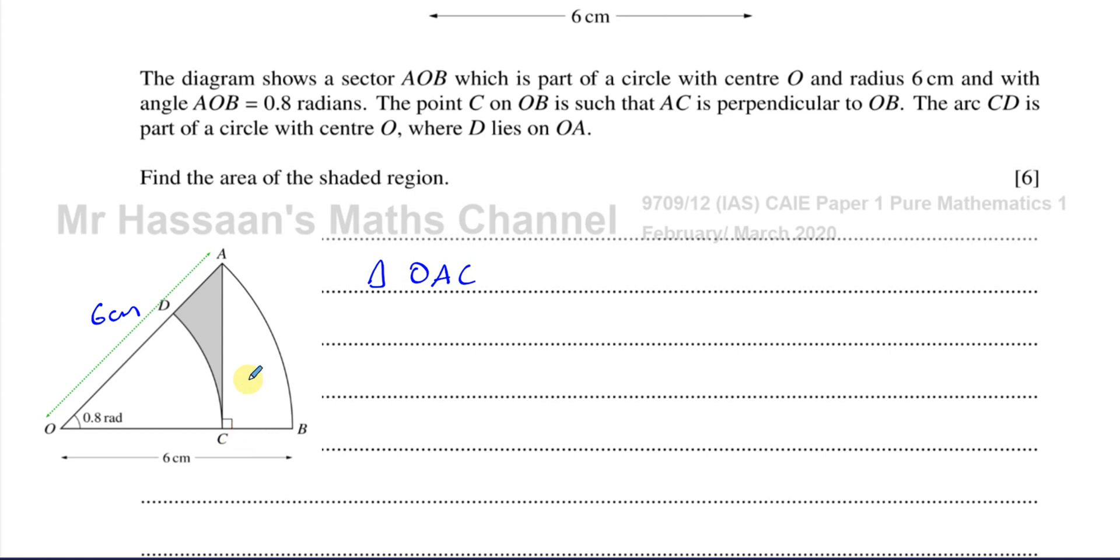So I'm thinking if I'm able to find, for example, this length here, if I'm able to find OC, I can then find the area of this triangle by using a half AB sine C. I could even find both of these lengths and use a half times base times height. But I think it would be easy just to find this one because that way I'll be able to find the area of the triangle.